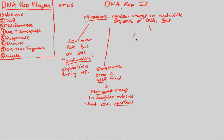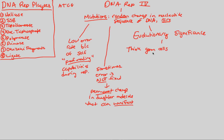That leads to the evolutionary significance of mutations — our final point for DNA replication and a great segue into your next lectures on evolution. When we talk about evolutionary significance, we have to think about germ cells. Germ cells are highly undeveloped gametes that will eventually develop, as you get older, into fully capable gametes. Gametes are sex cells — sperm and egg.